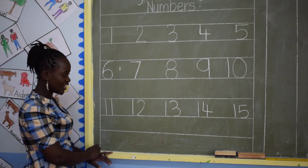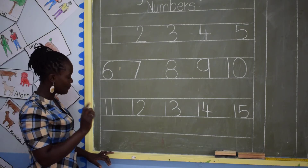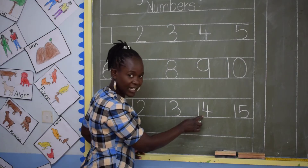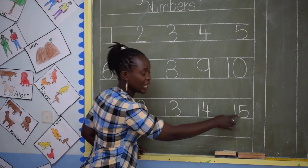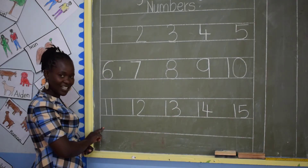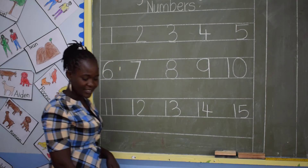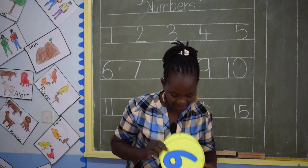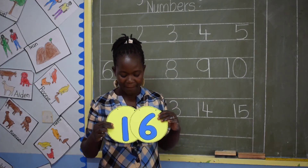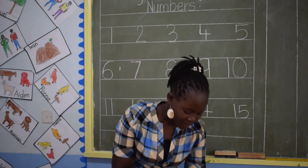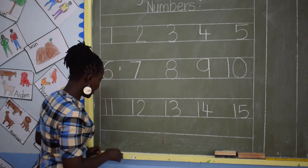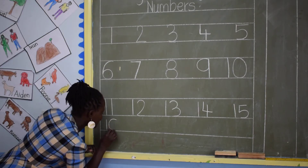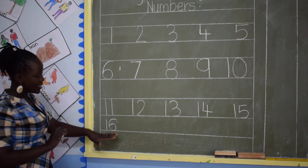Can we count again, children? 11, 12, 13, 14, 15, and 16. 16 is our next number, and 16 is 1 and 6. This is number 16. Now let's write number 16, children — 16 is 1 and 6. This is number 16.